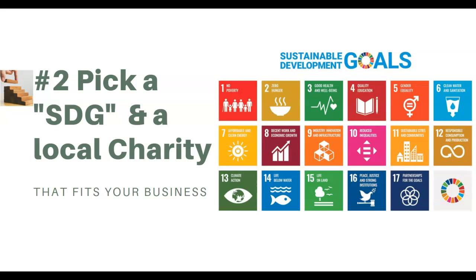The second step is to pick a sustainable development goal. I advise you to follow the system of picking from the sustainable development goals released by the United Nations. Here you see a picture of the 17 sustainable development goals. Choose the one that best fits your current business. For example, if you're in the business of producing educational material, goal number four — quality education — links to that. Or if you sell water filters, choosing number six — clean water and sanitation — would be more fitting. That's how you choose one sustainable development goal.